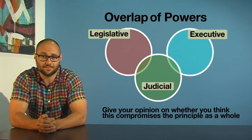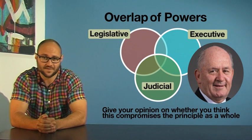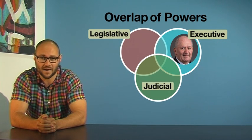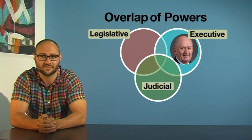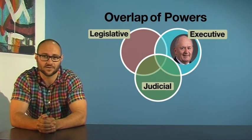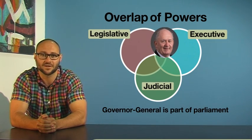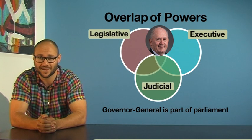There is overlap between all three functions. Firstly, the Governor-General holds executive power, but in reality this power rests with the Government of the day. Remember that the Governor-General and the Government are also Members of Parliament, which has control over the legislative function — the power to make law.